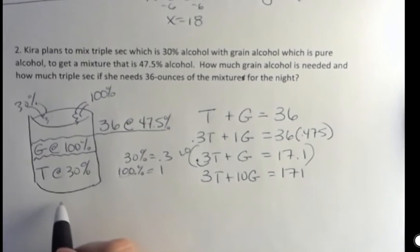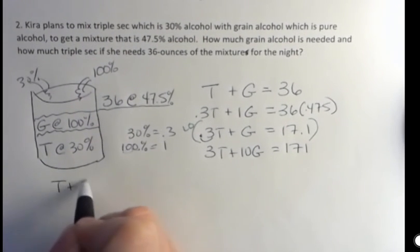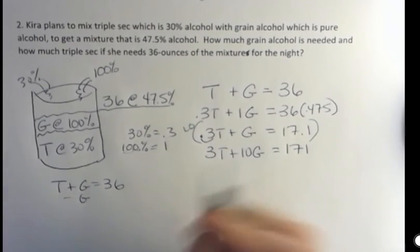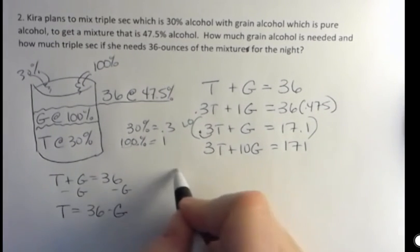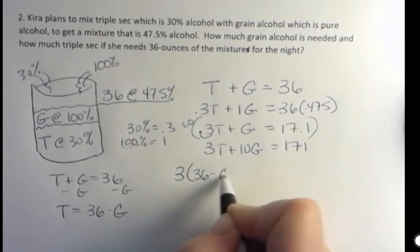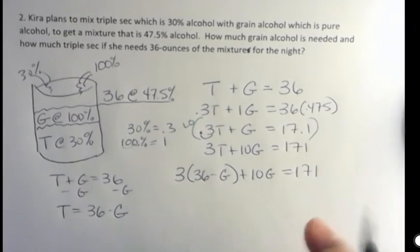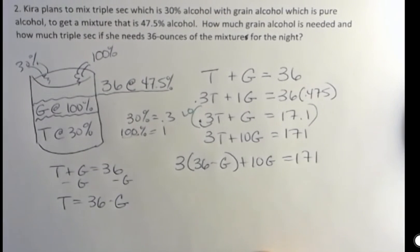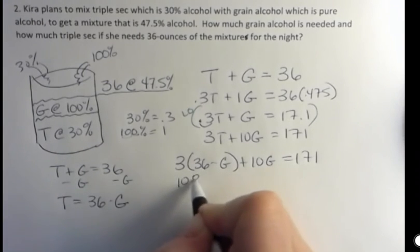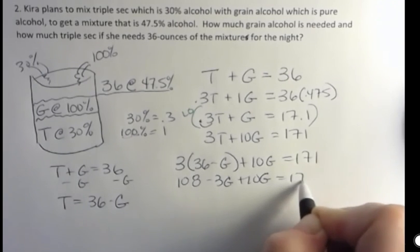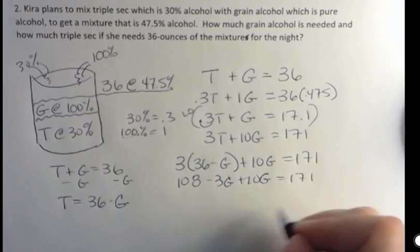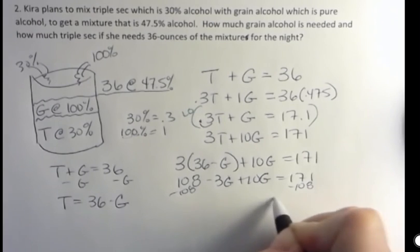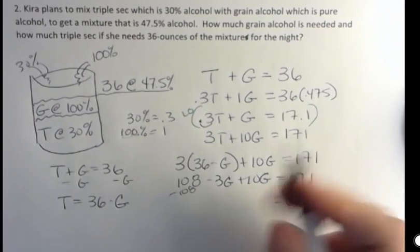Last one we did elimination. This one I'm going to do substitution. So I'm going to take T plus G equals 36 and I'm going to subtract G from both sides and get T equals 36 minus G. And so now instead of T, I'm going to say 3 times 36 minus G plus 10G equals 171. 171 minus 108 is 63 and 10 minus 3 is 7.